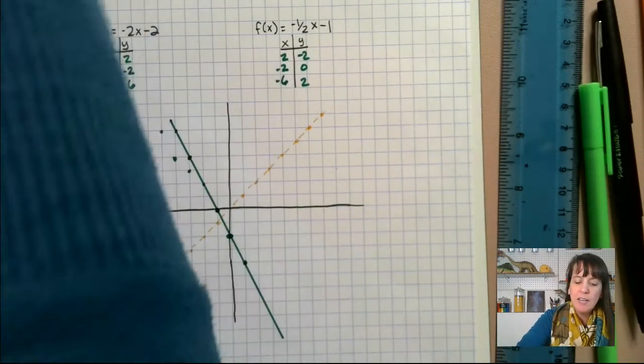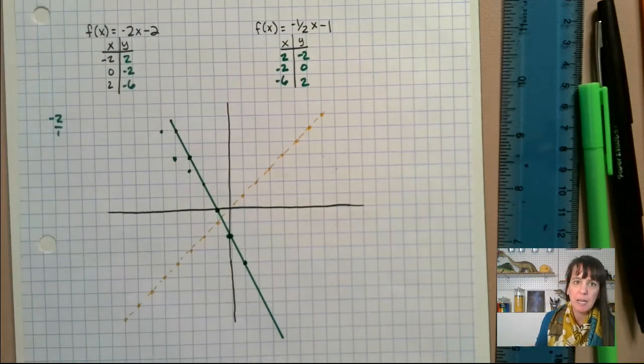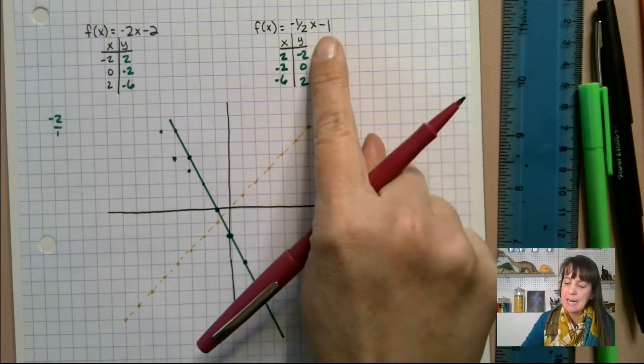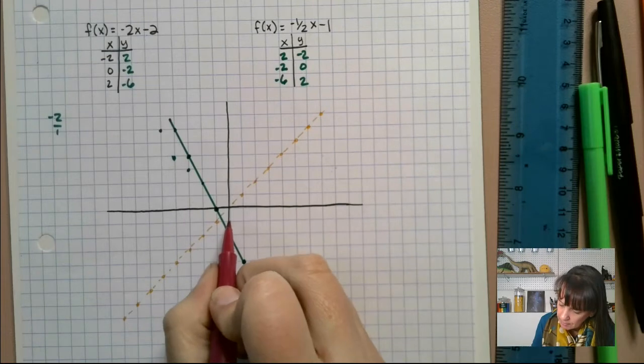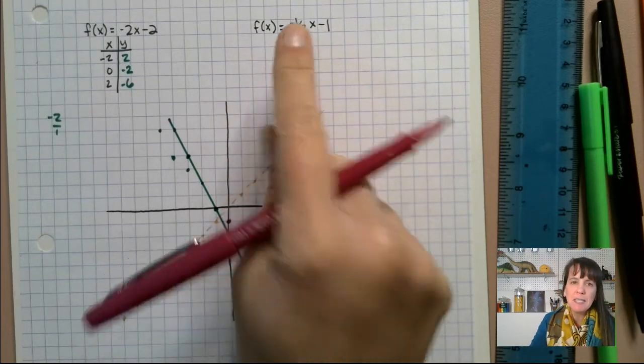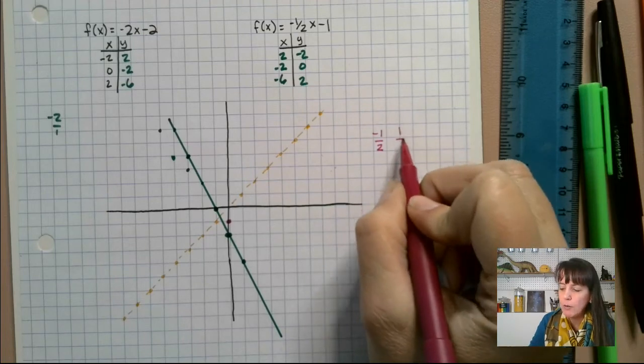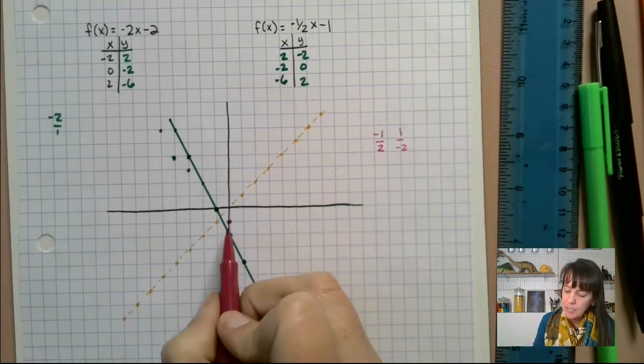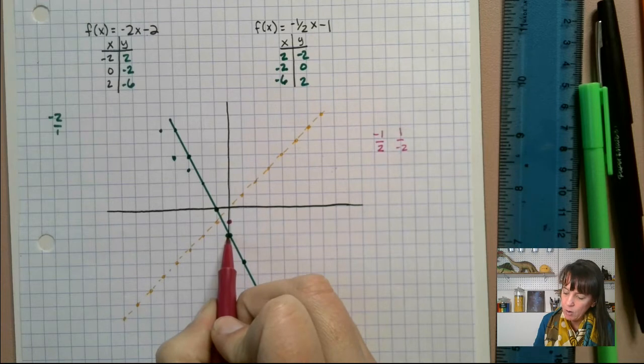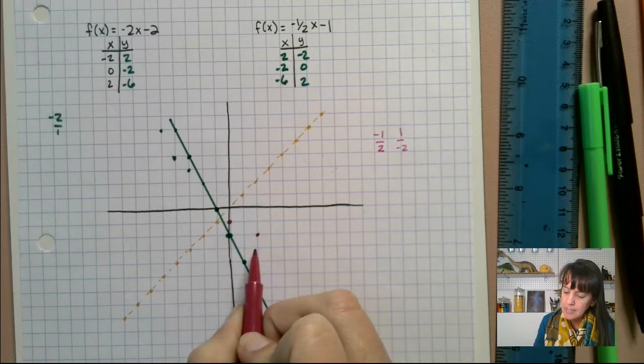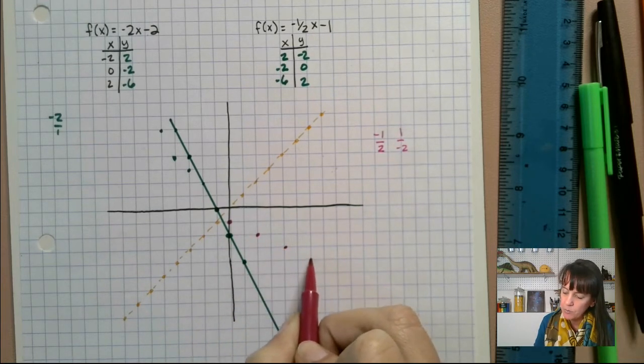So then our next guy, I'm going to do this one in pink. We start at negative one here. So that's this guy right here. And our slope is negative one over two, which can also be one over negative two. Both these mean the same thing. So from here, I can go down one and over in the positive direction two. Down one, positive two. Down one, positive two.